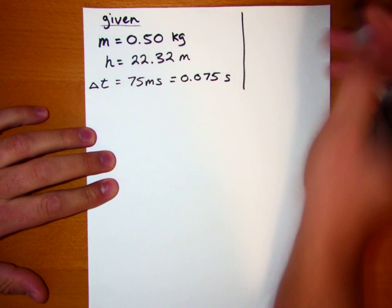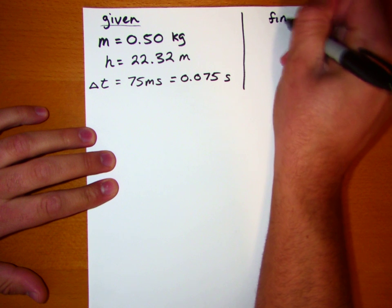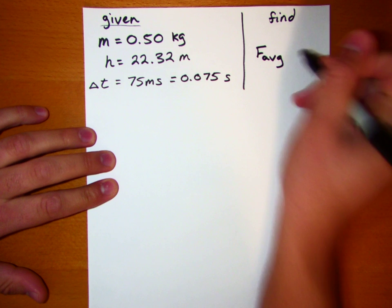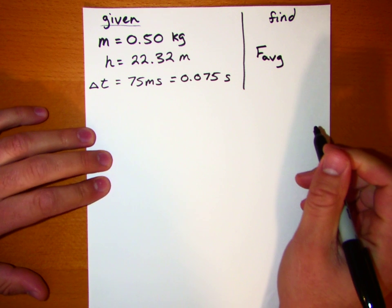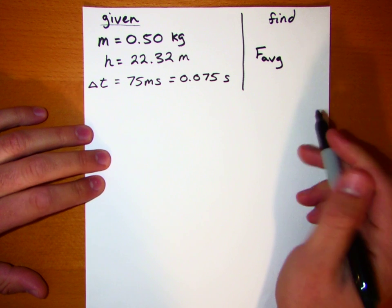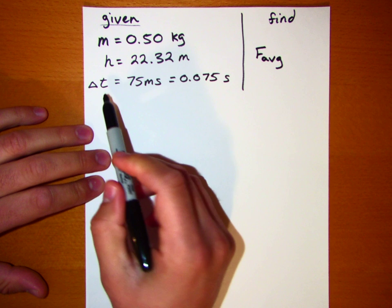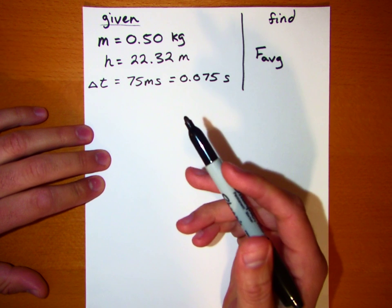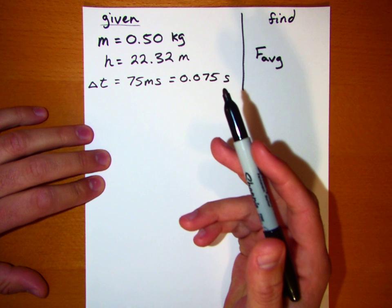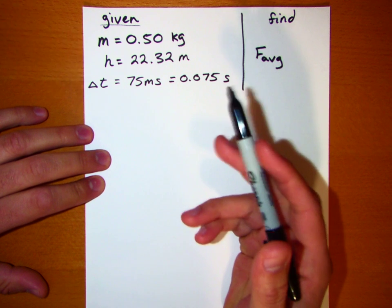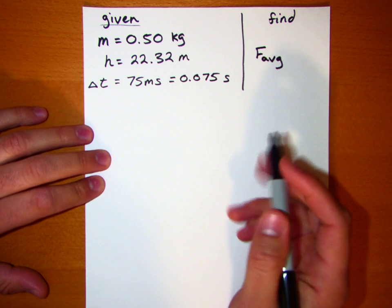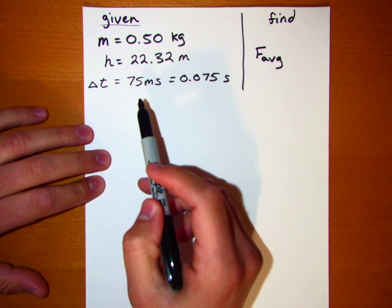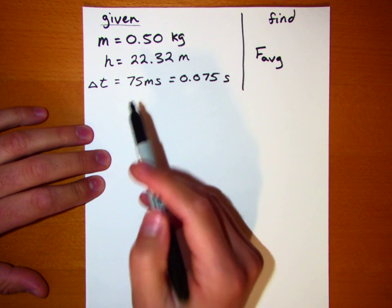Given these values, we want to find the average force that the ground exerts on the ball. As soon as I see something like 'the ball is in contact with the ground for 75 milliseconds' — or say, if this were baseball, the bat is in contact with the ball for 75 milliseconds — as soon as I see that time of contact, I'm immediately convinced that this is going to be an impulse problem.